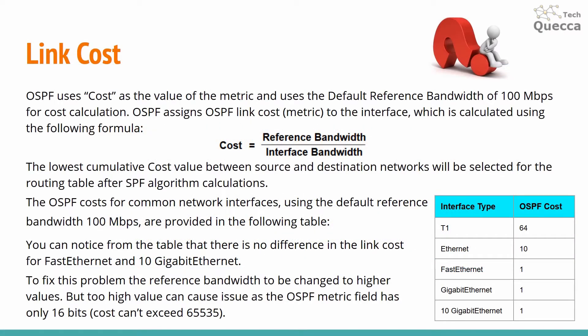OSPF uses cost as the value of the metric and uses the default reference bandwidth of 100 megabits per second for cost calculation. OSPF assigns link cost to the interface, which is calculated using the formula: cost equals reference bandwidth divided by interface bandwidth.